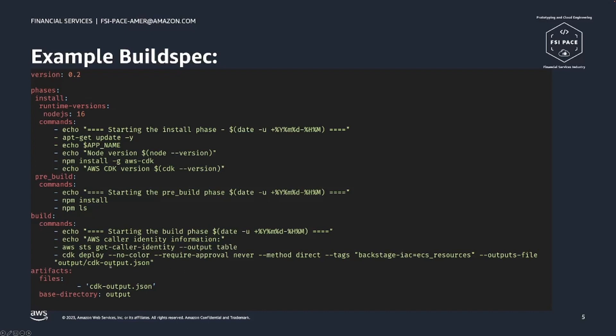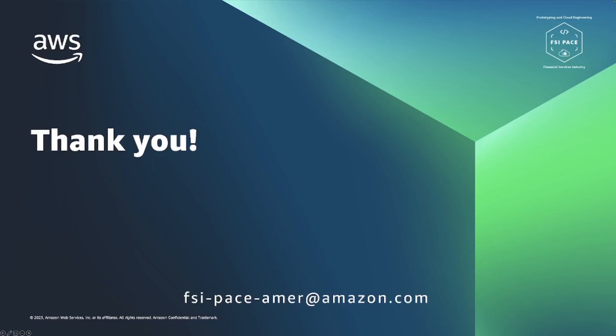Finally, we determine what file is going to have the outputs necessary, and those files are what Step Functions is going to output back to the user — which Backstage can leverage and present to the end user. Thank you for watching this video on application development for Backstage.io on AWS.